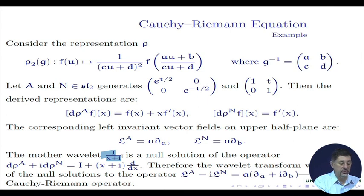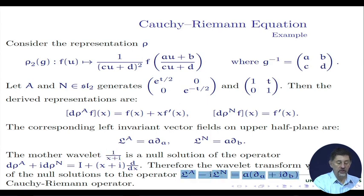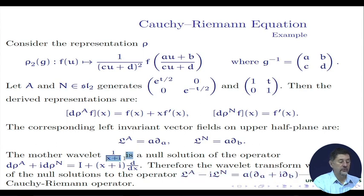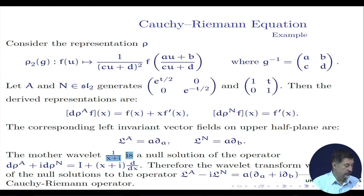That means that after we do the wavelet transform with this function, the resulting function will be annihilated by the corresponding right shift operators. And this right shift operator is exactly the Cauchy-Riemann operator. So if we do the wavelet transform with this vector, the result will consist of analytic functions. This is complex analysis which we are recovering — if we use that function, what we obtain is the Cauchy kernel, and corresponding functions after applying the Cauchy integral formula will be analytic.